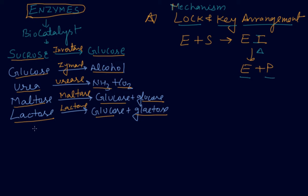Now the next topic is vitamins. Enzymes are very reactive at 298 Kelvin temperature and pH from 6 to 7.